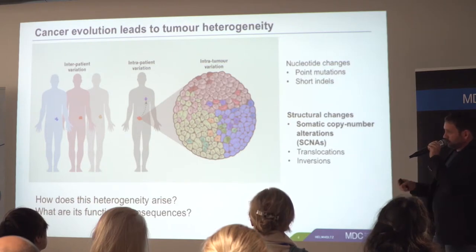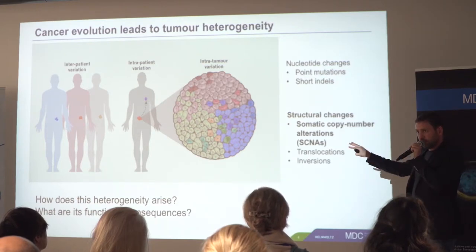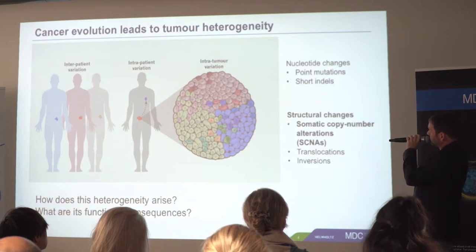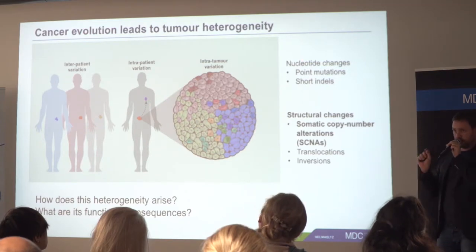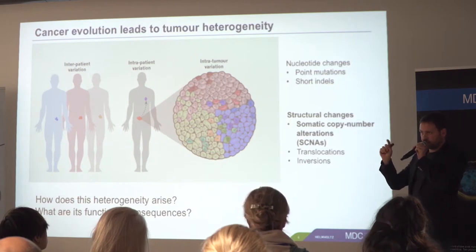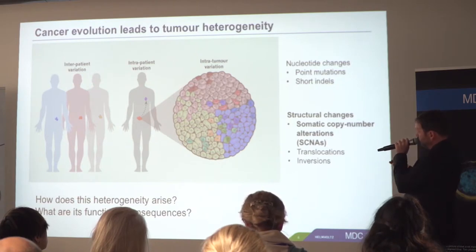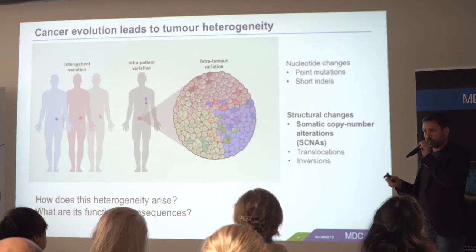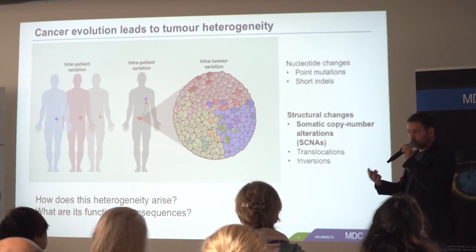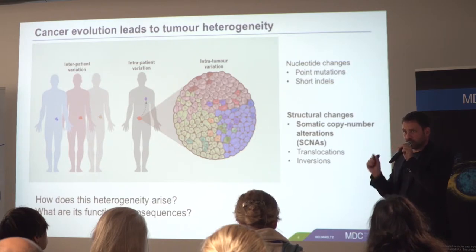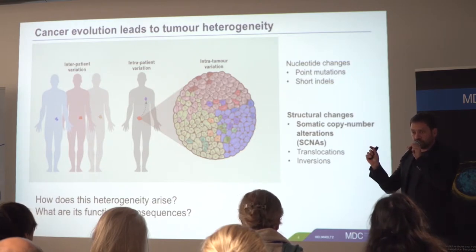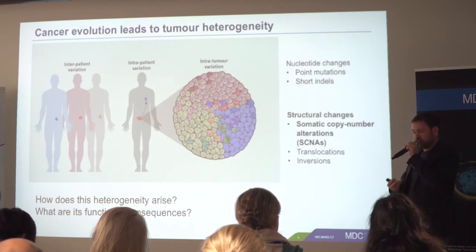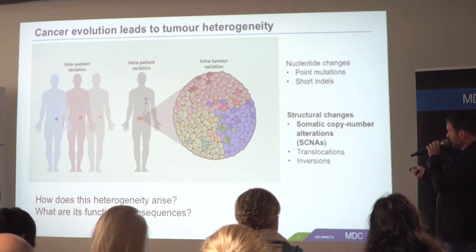These genetic changes — we're talking about the DNA — have two main aspects. One is direct changes to the nucleotide sequence: an A gets changed to a C, or small parts of the DNA are inserted or deleted. Then there is a second class of changes very important for cancer called structural changes: whole chromosome arms might be copied, certain genes might be amplified so the cancer cell suddenly has multiple copies of a particular gene — beneficial to the cancer, but really bad for the patient.